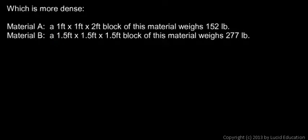In this problem we have to find the density of two different materials and find which one is more dense. So material A, let's calculate the volume here, and that's pretty easy. We're told a 1 foot by 1 foot by 2 foot block weighs 152 pounds.